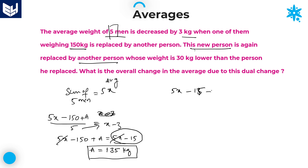Again, we are replacing this person with another person B. The person who replaced him has weight 30 kgs lower than the person he replaced. The person he replaced had weight 135, so 30 kgs lower means 135 minus 30, which equals 105.